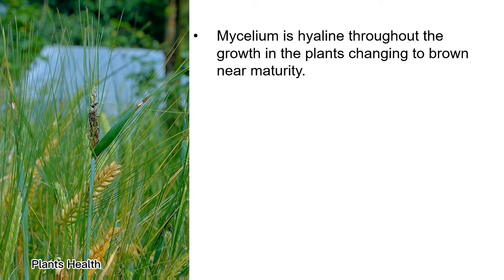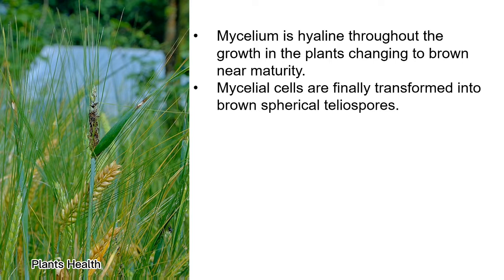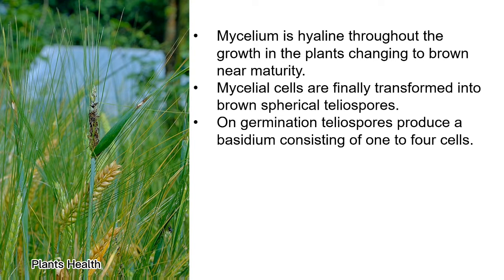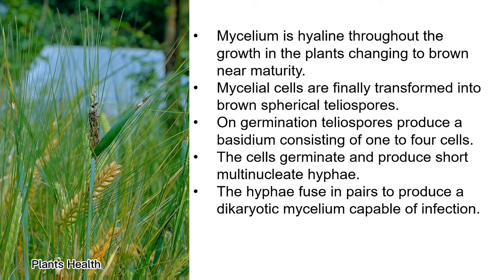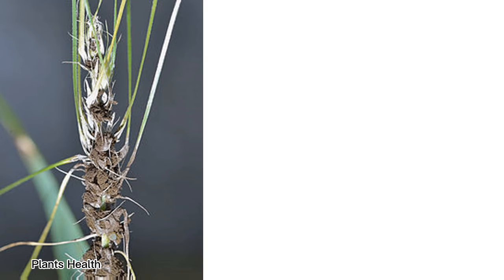Mycelium is hyaline throughout the growth in the plant, changing to brown near maturity. Mycelial cells are finally transformed into brown spherical teliospores. On germination, teliospores produce a basidium consisting of 1 to 4 cells. The cells germinate and produce short multi-nucleate hyphae. The hyphae fuse in pairs to produce a dikaryotic mycelium capable of infection.